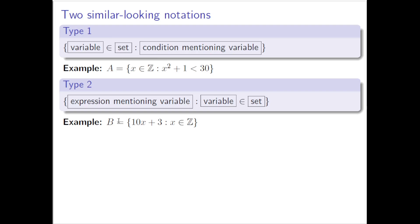Here's a set called A, and here's a set B. Set A is an example of Type 1 because you have a variable in a set right there — x in ℤ, which is variable in set — and then here's the condition that mentions the variable. The variable is x, and the condition is x² + 1 < 30. That could be true or false depending on the value of x. So it's a condition — true or false depends on what x is. I hope just by showing this example it clarifies what we meant by condition mentioning variable.